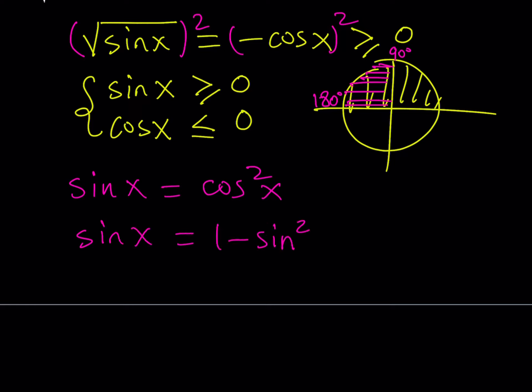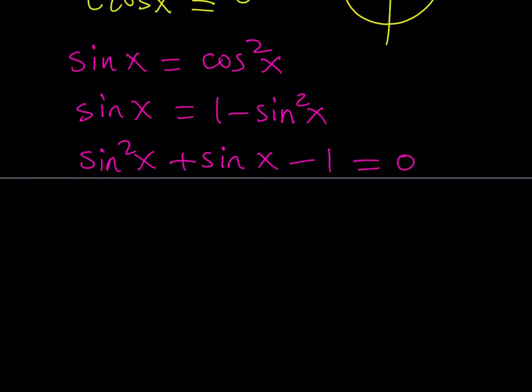Then put everything on the same side. Sine squared x plus sine x minus 1 equals 0. This problem has a golden flavor and you'll notice in a little bit why we are dealing with the golden ratio here.